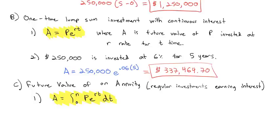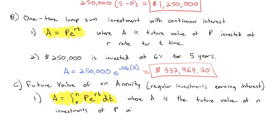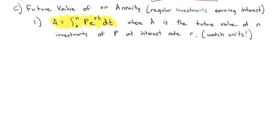A is the future value of n investments of P at interest rate r. A warning: we have to watch the units. If we're making investments once a year, keep the interest rate annual. If investing once a month, divide the interest rate by 12 to get a monthly rate. If investing every day, divide by 365 to get a daily rate. Be very careful with units when doing annuities.